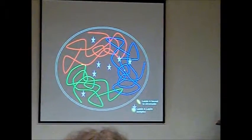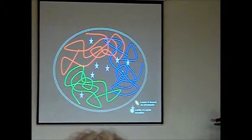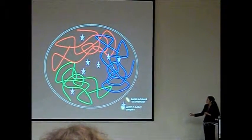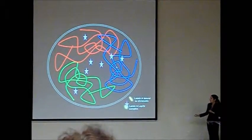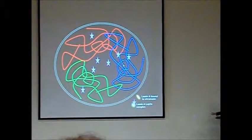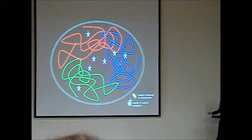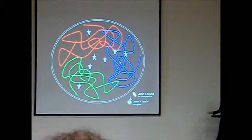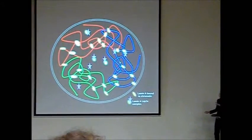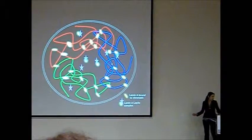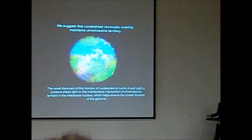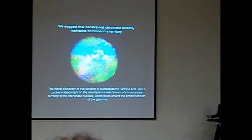So based on our experiment, we propose the model of chromatin organization. Here you can see a schematic picture of chromatin, each color is different chromosomes, and where we don't have lamin A, the chromatin now is much more free to move. These stars are LAP2α, but without lamin A, it does not bind to chromatin. But when I have lamin A, then lamin A will bind to chromatin and by this prevent chromatin to move freely. So we suggest that such kind of constrained chromatin mobility maintains chromosome territory.